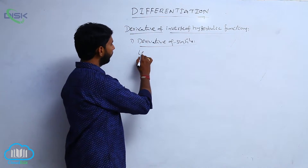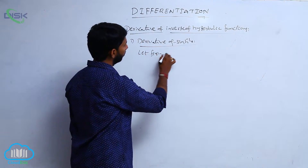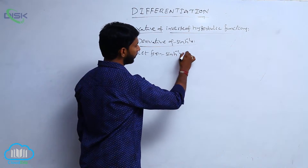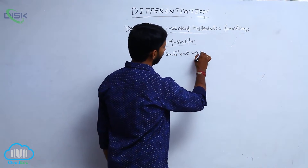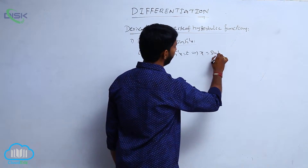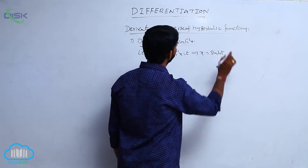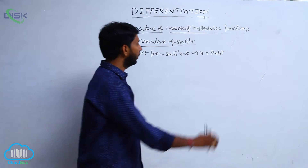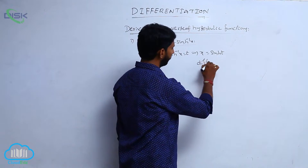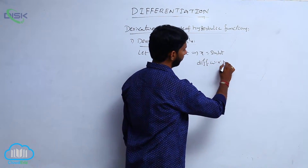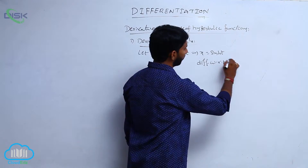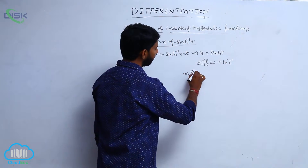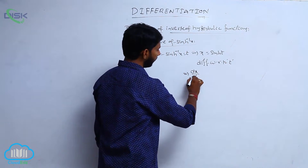Let f of x equal to sinh inverse x, that is equal to t. That implies x equal to sinh t. Differentiate with respect to t on both sides.